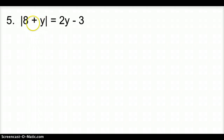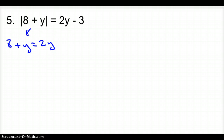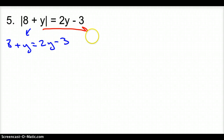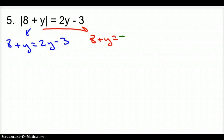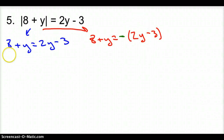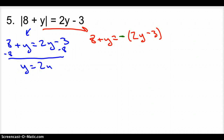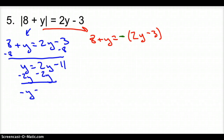Number 5. The absolute value is already by itself, so I'll rewrite both equations. First: 8 plus y equals 2y minus 3. Second: 8 plus y equals negative (2y minus 3). Solving the first equation: subtract 8 from both sides to get y equals 2y minus 11, then subtract 2y to get negative y equals negative 11, so y equals 11.